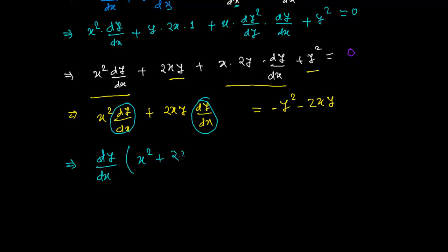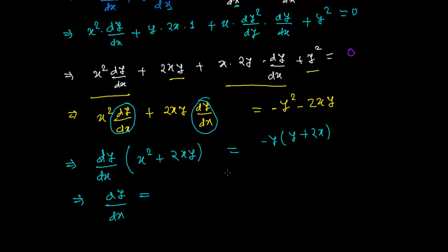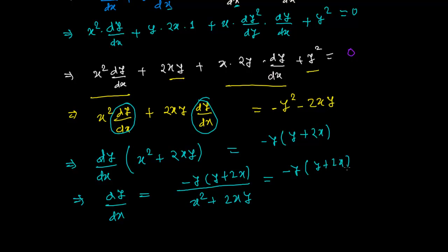Taking dy over dx common on the left gives dy over dx times (x squared plus 2xy). On the right side, we can factor out minus y, leaving minus y times (y plus 2x). Then dividing both sides by (x squared plus 2xy), and factoring x from the denominator gives x times (x plus 2y).